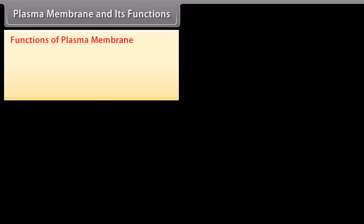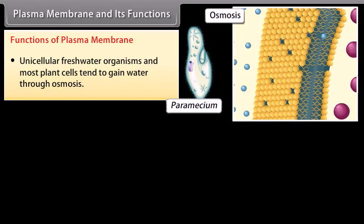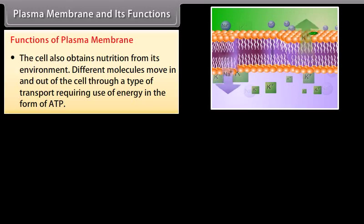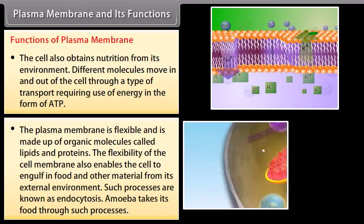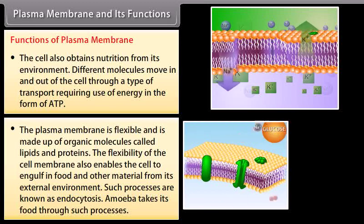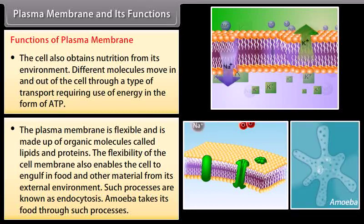Unicellular freshwater organisms and most plant cells tend to gain water through osmosis. Absorption of water by plant roots is also an example of osmosis. Diffusion is important in exchange of gases and water in the life of a cell. The cell also obtains nutrition from its environment; different molecules move in and out of the cell through a type of transport requiring use of energy in the form of ATP. The plasma membrane is flexible and made up of organic molecules called lipids and proteins. Its flexibility enables the cell to engulf food and other materials from its external environment — such processes are known as endocytosis. Amoeba takes its food through such processes.